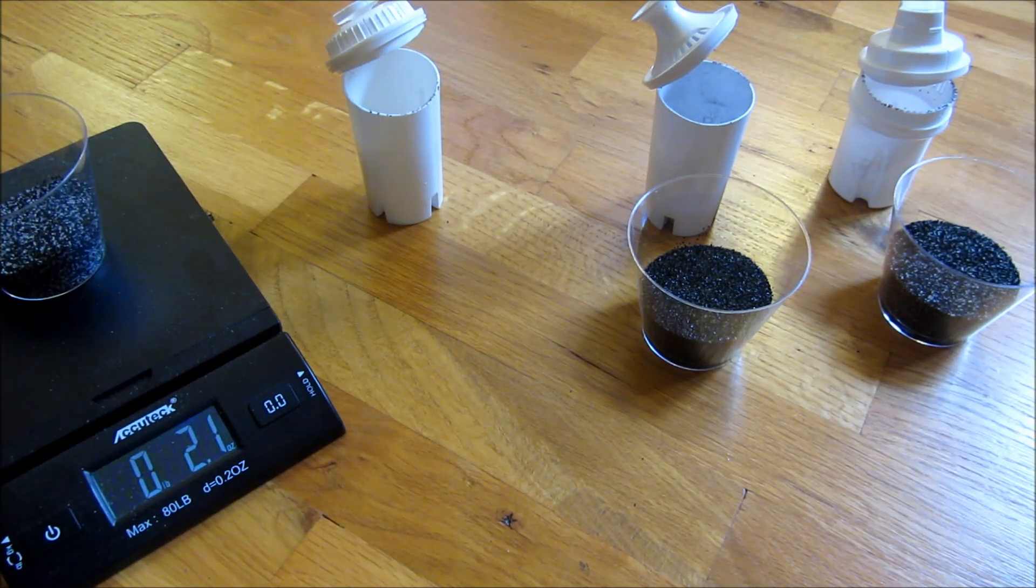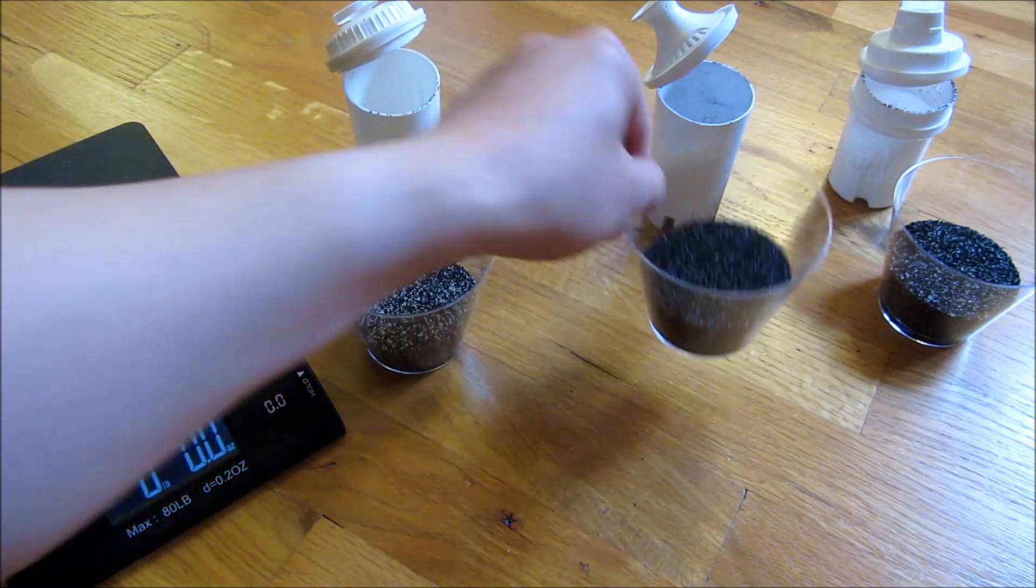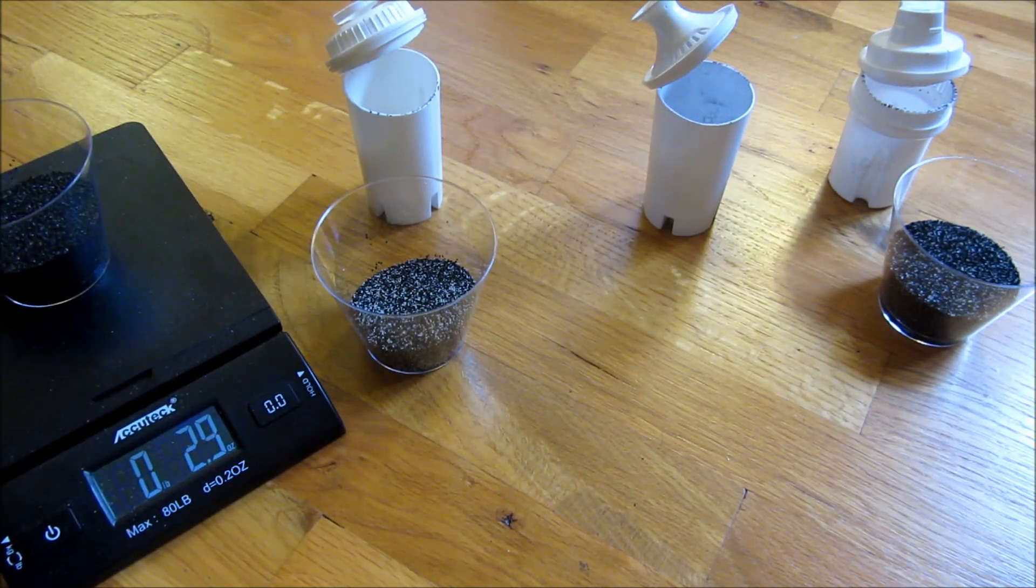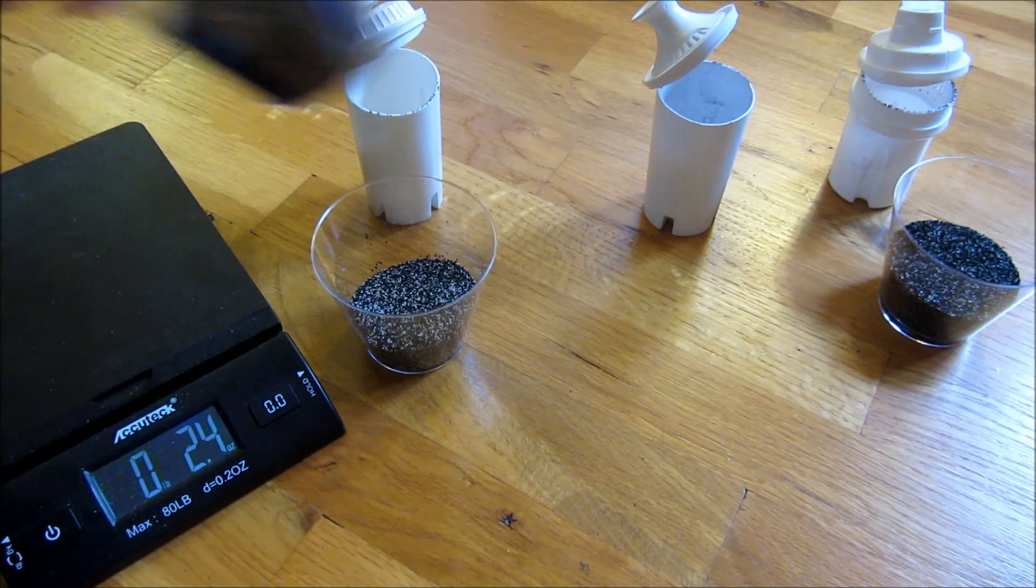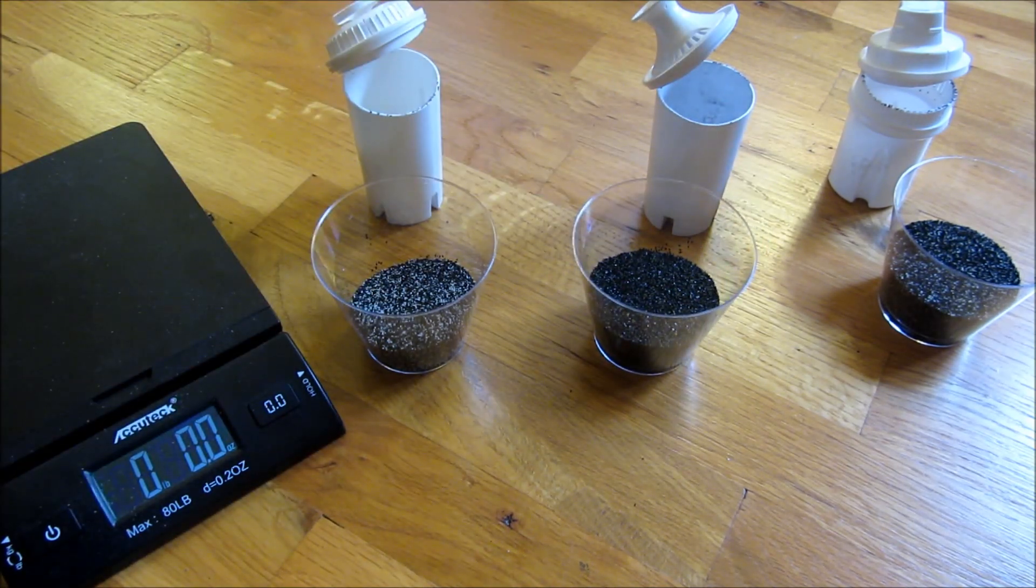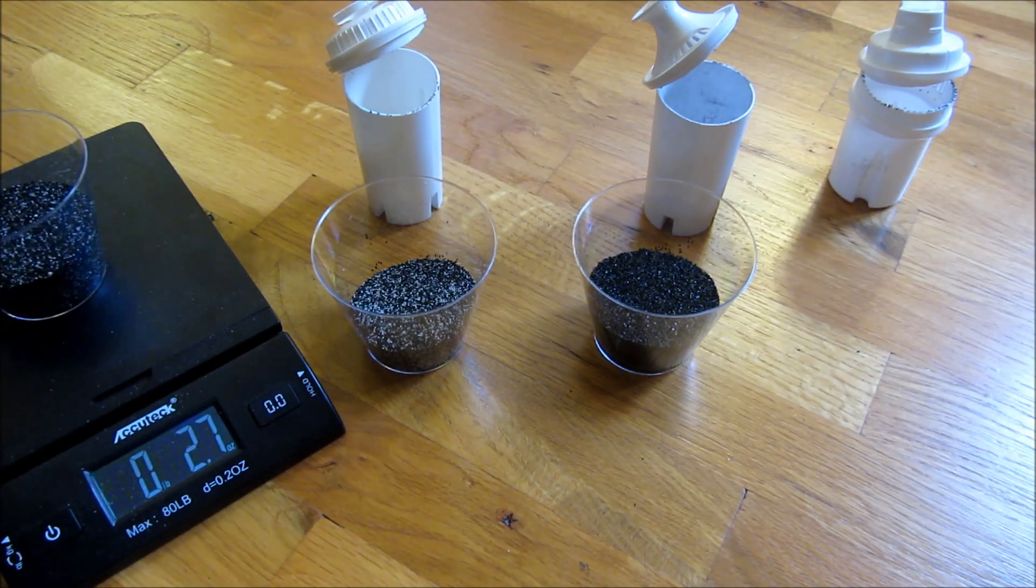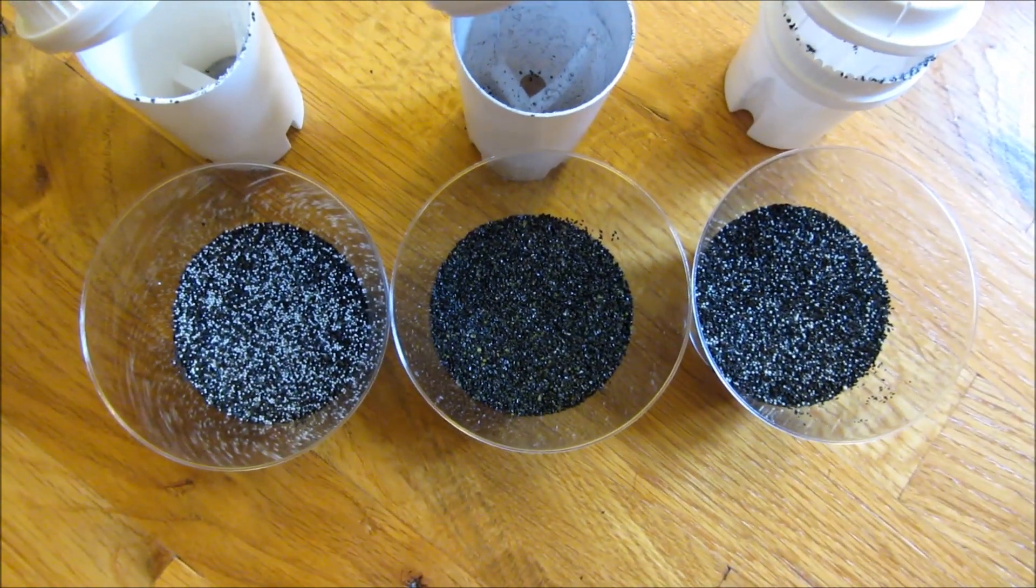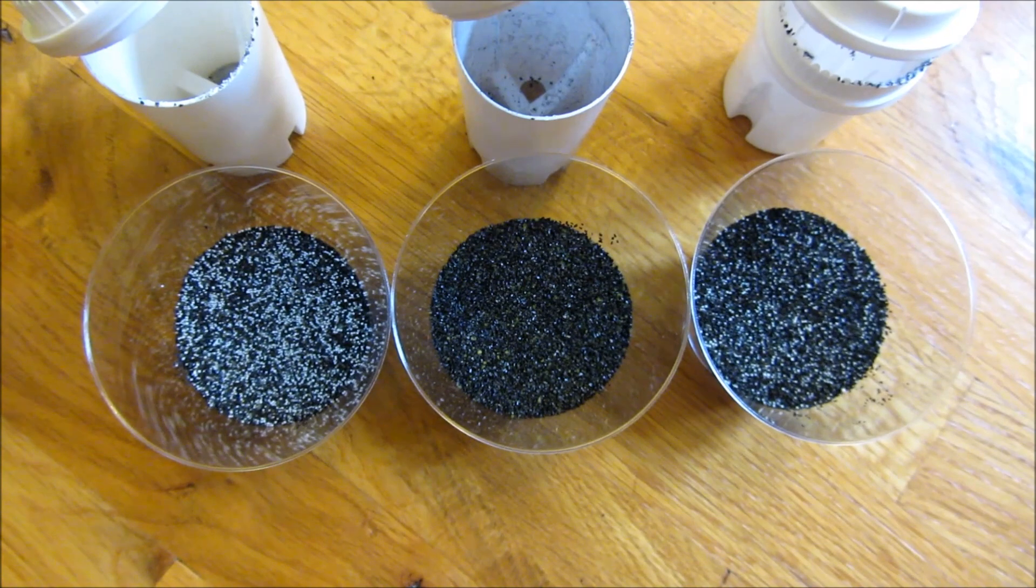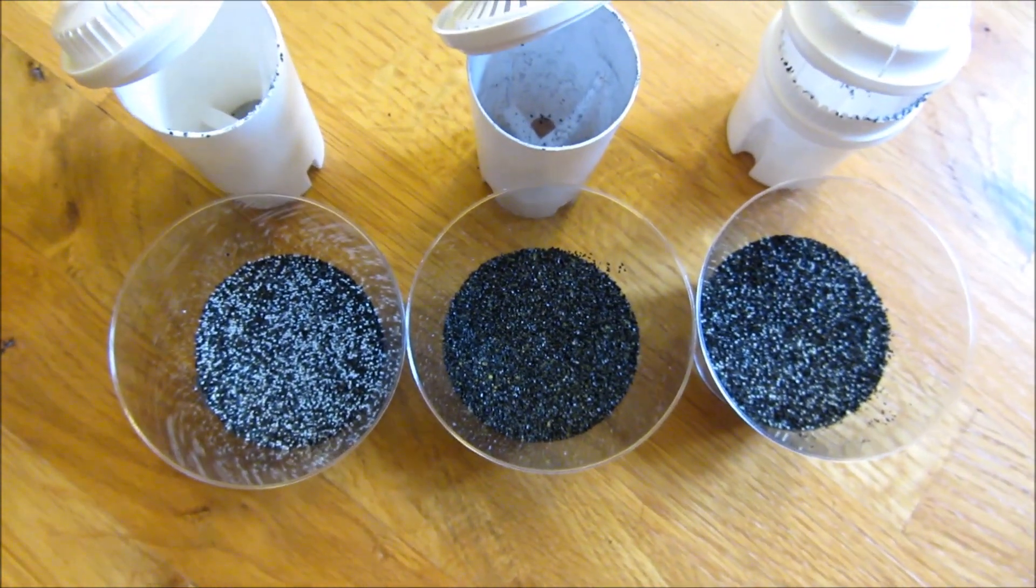And so the Home Depot one is 2.1 ounces. The Brita one is 2.9 ounces. And the Target one is 2.7 ounces. So as you can see that the Brita actually has the most activated carbon.